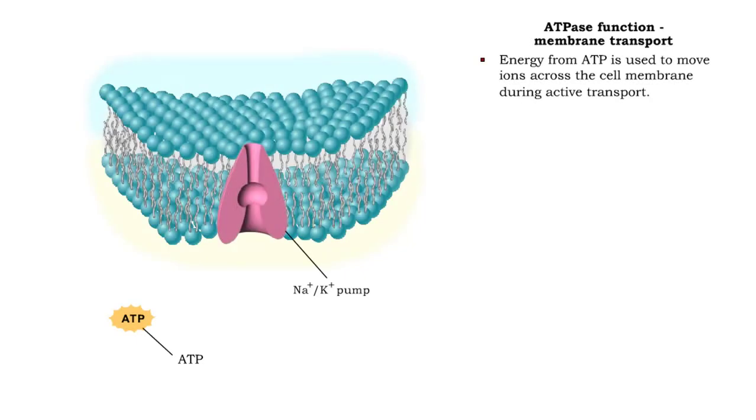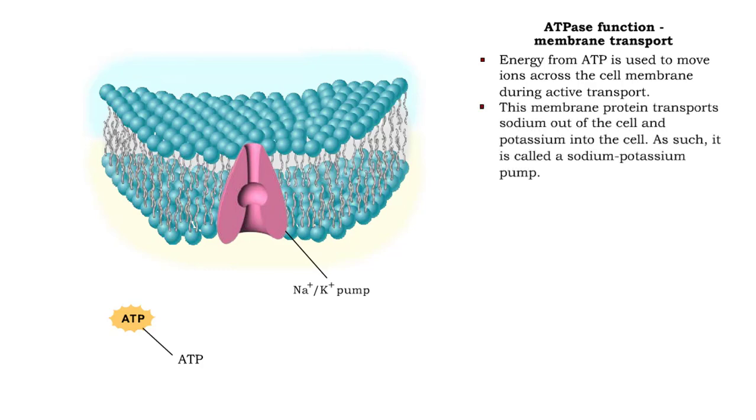ATPase in the cell membrane uses the energy from ATP to move ions against their concentration gradients. This membrane protein transports sodium out of the cell and potassium into the cell. As such, it is called a sodium-potassium pump.